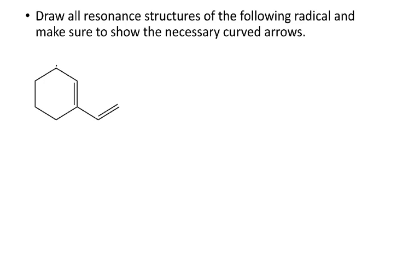In this first example, we want to draw all the resonance structures of the following radical. Now, when we learned about resonance before, there were a number of different patterns. With radicals, there are a number of different patterns, but by far the most important one is when we have our unpaired electron in an allylic position, so it's adjacent to a double bond.